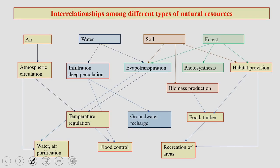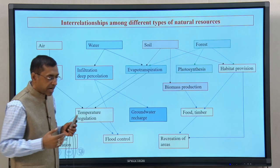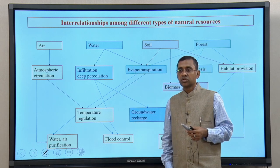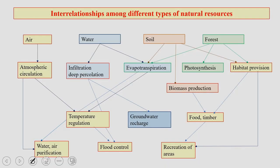This particular figure or diagram illustrates the interrelationship among different types of natural resources. If we take a few top resources — water, soil, and forest — we can see that each one of them is related to the others in a dynamic fashion. If you look at air, it is involved in atmospheric circulation and has a role in regulating temperature in our environment.